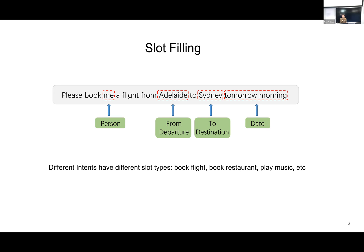This slot filling task is quite different from normal text classification tasks like sentiment analysis. In slot filling, you want to extract more detailed information. Once you know the intent is 'book flight', tokens like 'please book a flight from' do not contribute key information, but 'me', 'Adelaide', 'Sydney', and 'tomorrow morning' are the key information. We can regard this as a token-level classification task.